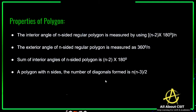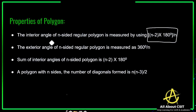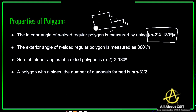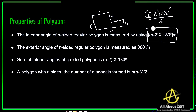Now let's see the properties of the polygon. The interior angle of an n-sided regular polygon is measured by using the formula: (n minus 2) times 180 degrees, divided by n. So if you want to find the interior angle of an n-sided polygon — for example, a polygon with 6 sides — you apply: (6 minus 2) times 180 degrees divided by 6. This is how we calculate the interior angles of an n-sided regular polygon.